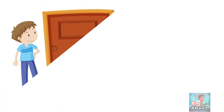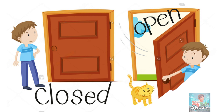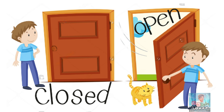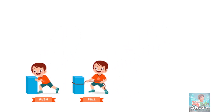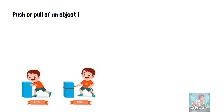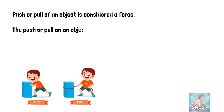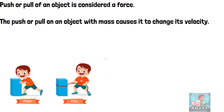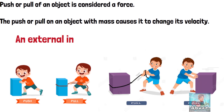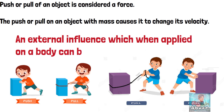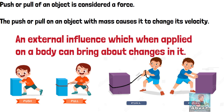First, in this video, we can explain Force. We know that if you push a door, you can push or pull, and if you push or pull, you can move an object. This is called Force. The push or pull on an object with mass causes it to change its velocity. In technical language, it is called an external influence which, when applied on a body, can bring about a change in it. If you explain the logic of this, it's called Force.